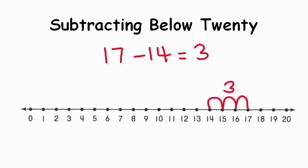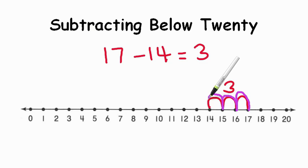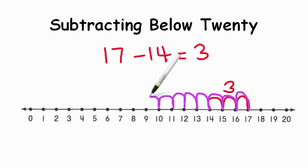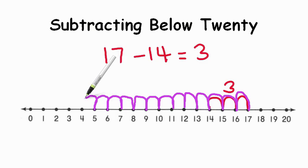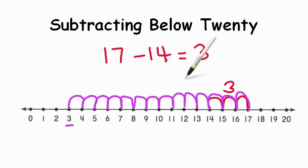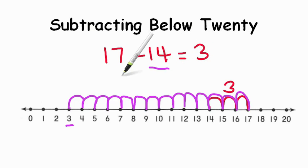Now let's check that. We could have counted back, but it would take a lot longer. Starting at 17 and counting back 14: 1, 2, 3, 4, 5, 6, 7, 8, 9, 10, 11, 12, 13, 14 — did we land on 3? Yes, we did. But do you see how long that took? If the numbers are fairly close to each other, count on to find the answer. Look at the smaller number, count on to the bigger number, and that number you counted on will be your answer. It takes a lot less time than counting back 14 hops.